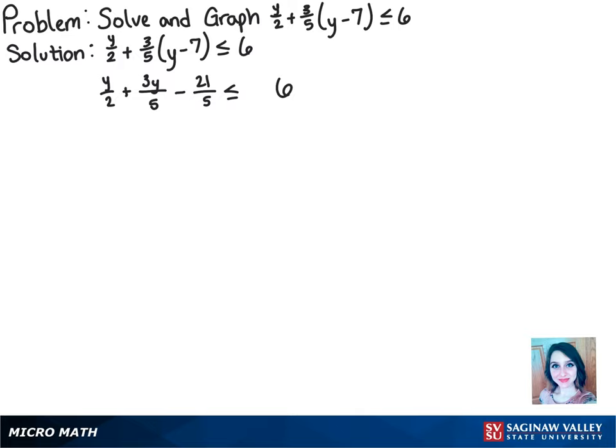We can get rid of both denominators by multiplying the inequality by their product, which is 10. So we have 10 times y over 2 plus 3y over 5 minus 21 over 5 is less than or equal to 10 times 6.